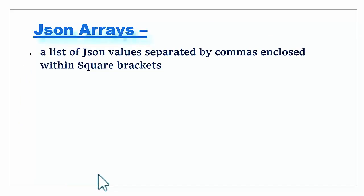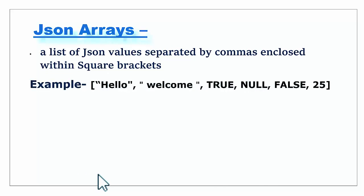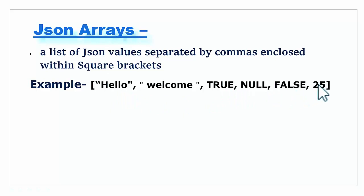JSON arrays are a list of JSON values separated by commas and enclosed within square brackets. Here is an example — a string, Boolean, NULL, and number. This is the list of JSON values enclosed within square brackets, which makes it a JSON array.